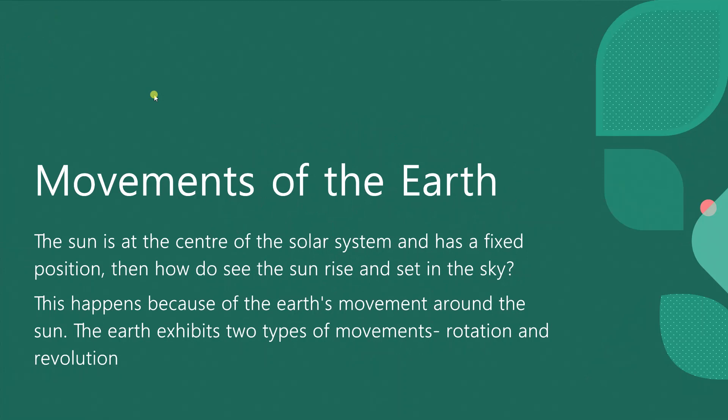The sun is at the center of the solar system and has a fixed position. Then how do we see the sun rise and set in the sky? This happens because of the earth's movement around the sun. The earth exhibits two types of movements, rotation and revolution.